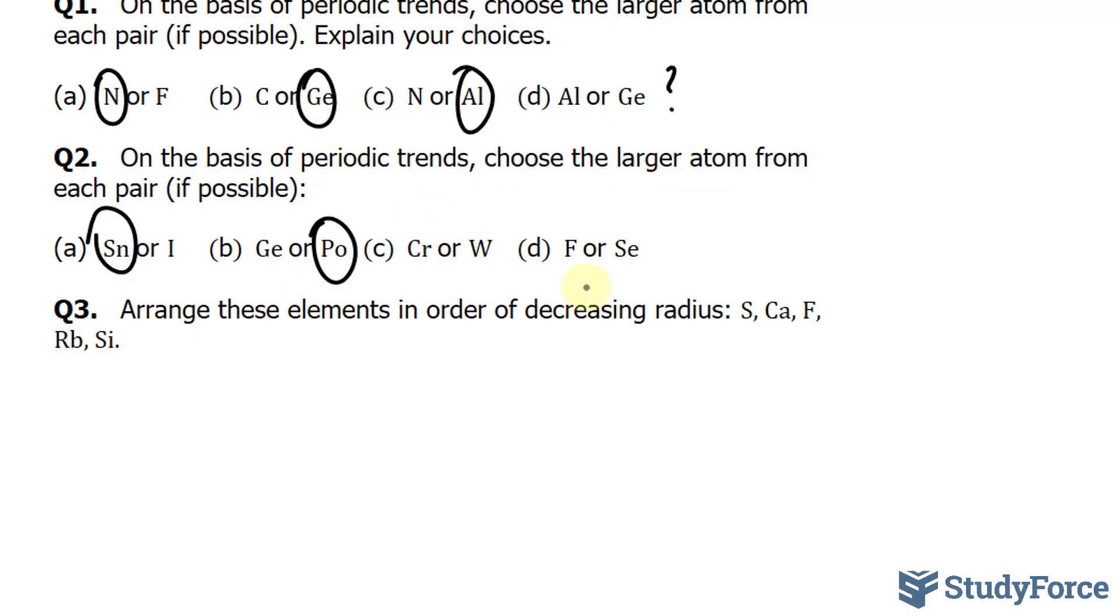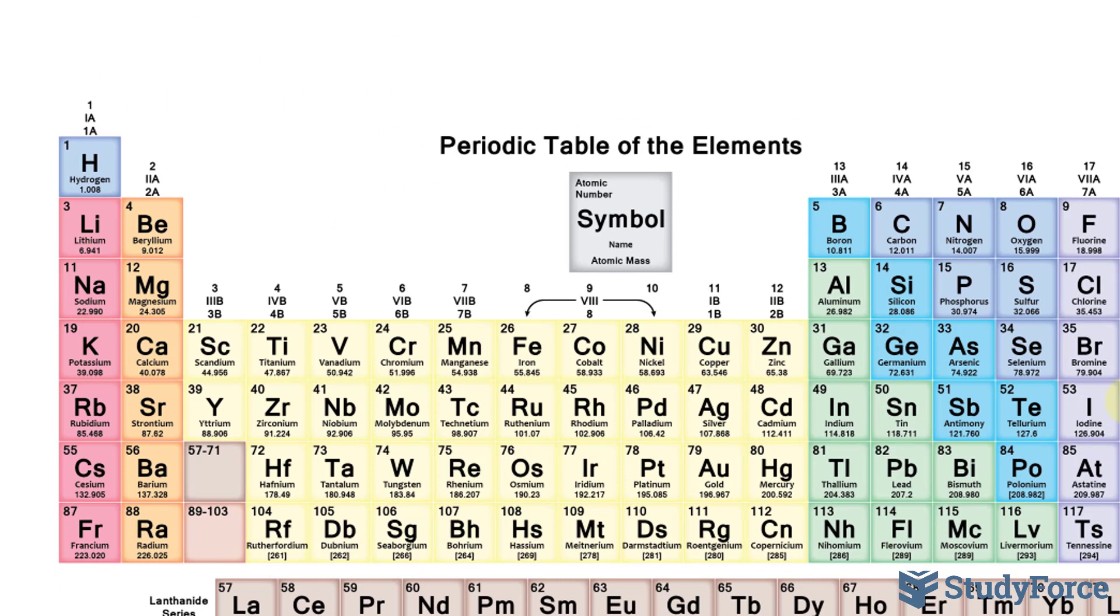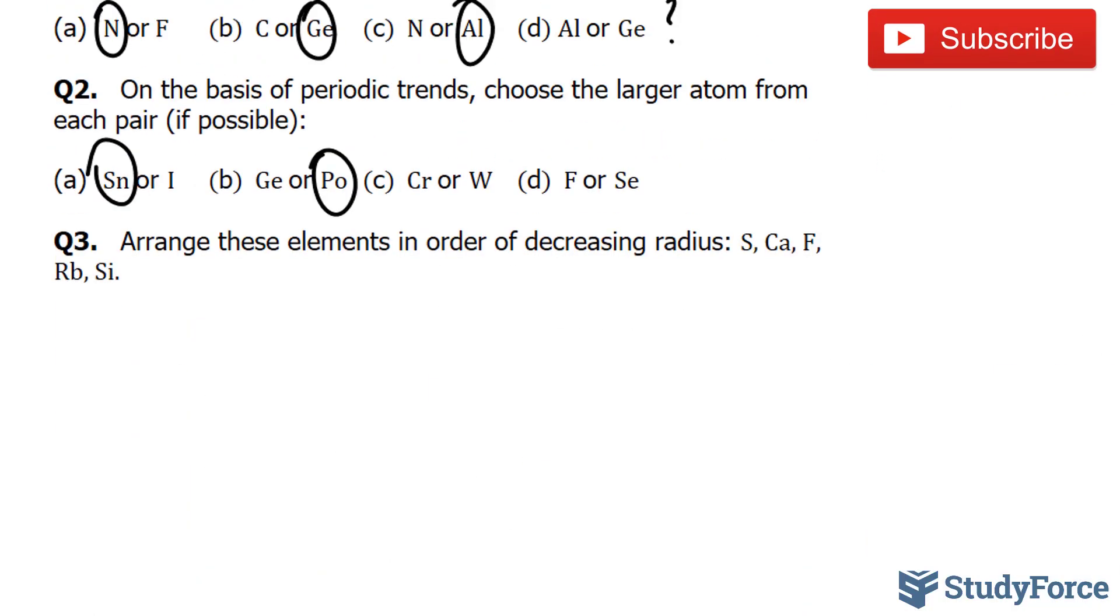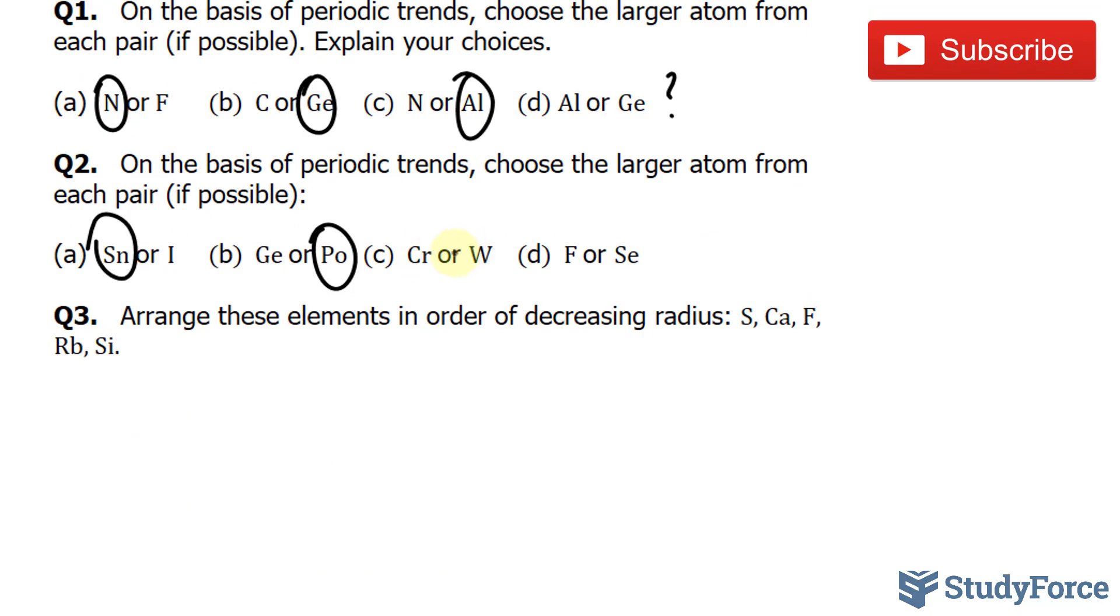Next, we compare chromium with tungsten. So chromium is here, tungsten is down here. We're moving down a column. We can automatically assume that chromium is the smaller of the two.